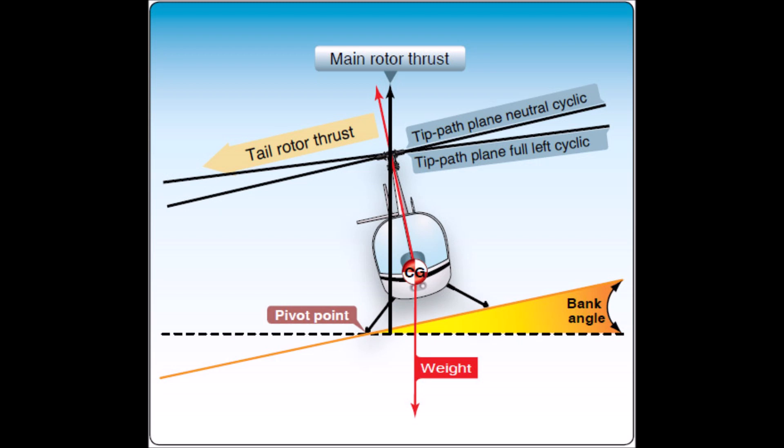For dynamic rollover to occur, some factor must first cause the helicopter to roll or pivot around a skid or landing gear wheel until its critical rollover angle is reached. The angle at which dynamic rollover occurs will vary based on helicopter type. Then, beyond this point, main rotor thrust continues the roll and recovery is impossible.